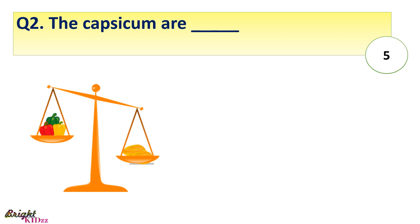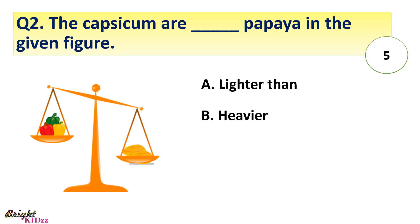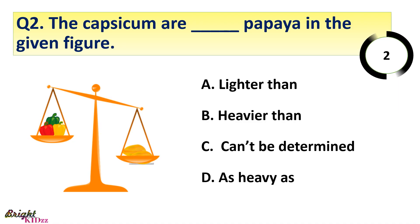The capsicum are dash papaya in the given figure. Answer A: lighter than, B: heavier than, C: can't be determined, D: as heavy as. Answer: lighter than, because here we can see papaya is heavy.